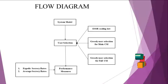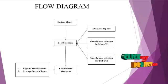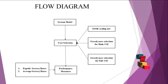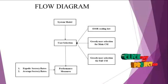The ESSR scaling law means ergodic secrecy sum rate. It is used to feedback at the transmitter and derive the closed form of expressions. The second one is greedy user selection for main CSI and the third one is greedy user selection for full CSI.